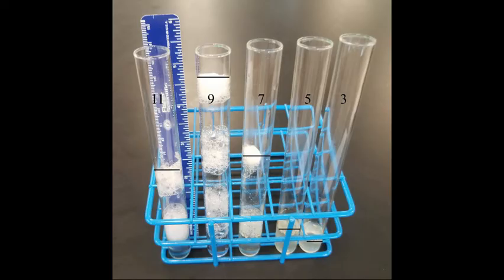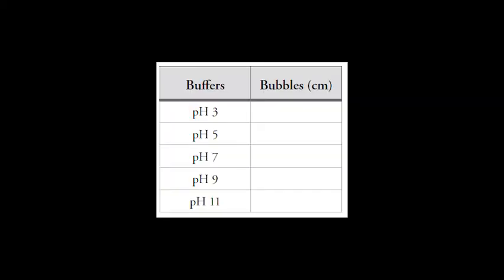Observe the tubes for the next one to two minutes and look for the formation of bubbles in one or more of the test tubes. Bubble formation is evidence of oxygen production and indicates that the enzyme catalyzed reaction is occurring. As soon as the column of bubbles in any tube reaches the top of the tube or the tallest column of bubbles reaches its maximum height, measure the height of the bubbles in each of the five tubes.